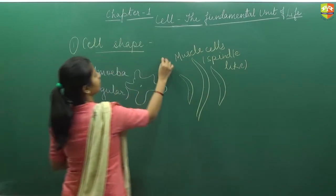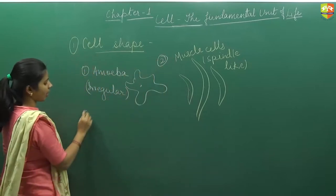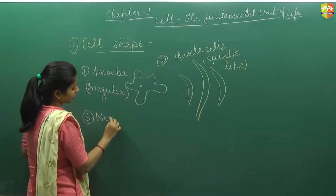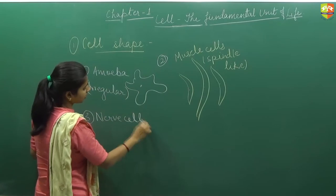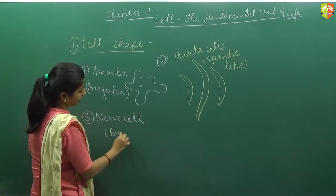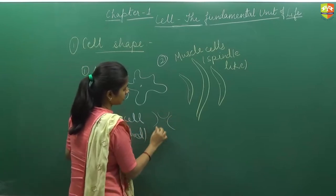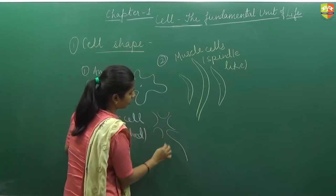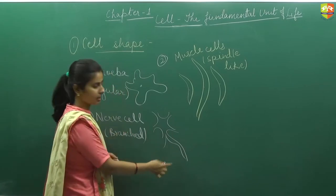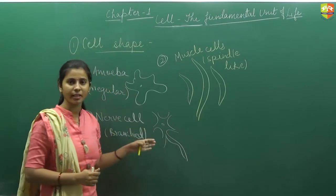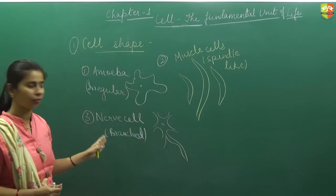Third is the nerve cell. This is second, we are just considering the example. Nerve cell is kind of branched cell. This is the main body cytoplasm and this is the axon. It is branched structure. This is the longest cell of our body.